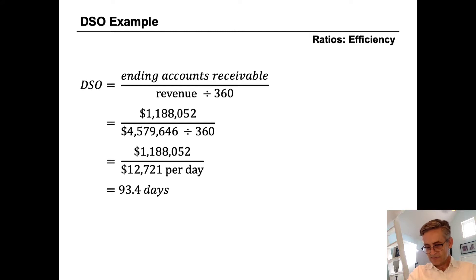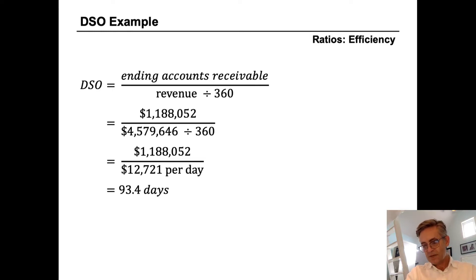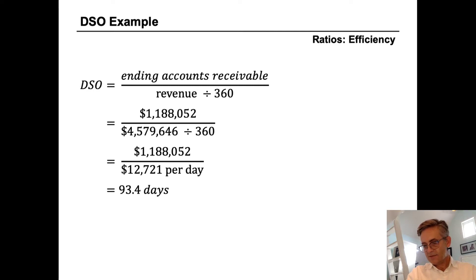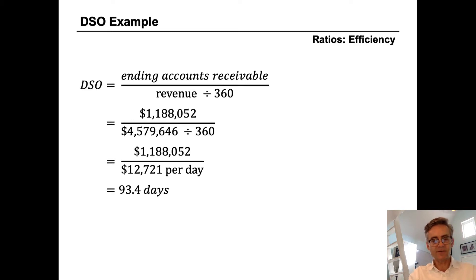This means that when Hasbro sells Monopoly board games, for example, to Walmart and Amazon, it takes them on average 93 days to collect payment for those goods. In general, lower is considered better and more efficient, but this metric depends a great deal on the industry and is usually within a few days of the customary vendor terms. If it's outside of the customary vendor terms, it could indicate a problem.